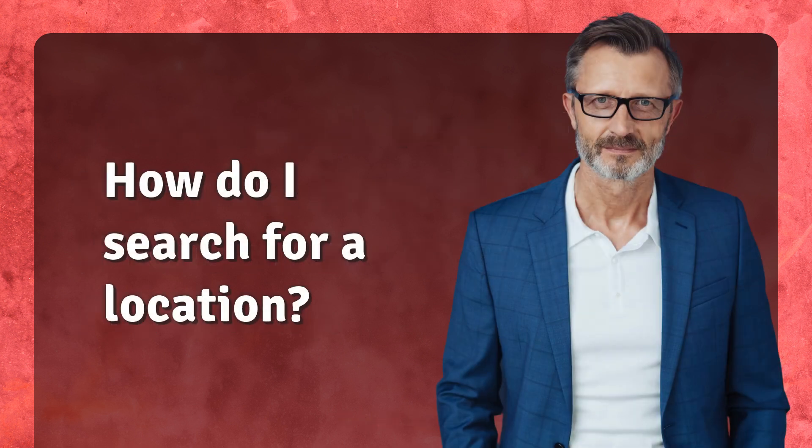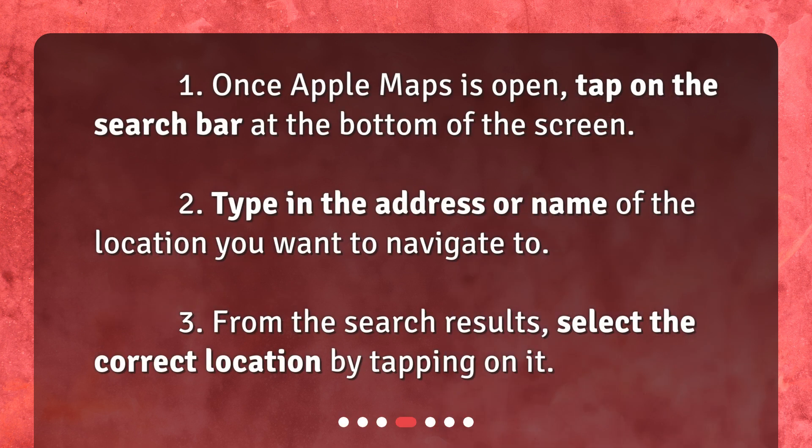How do I search for a location? 1. Once Apple Maps is open, tap on the search bar at the bottom of the screen. 2. Type in the address or name of the location you want to navigate to. 3. From the search results, select the correct location by tapping on it.